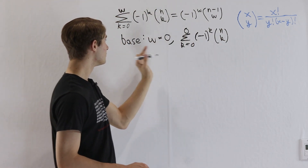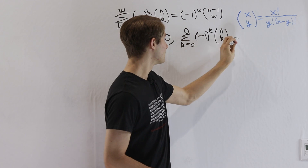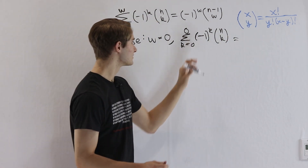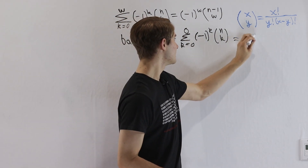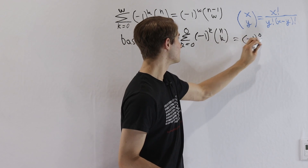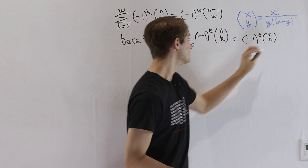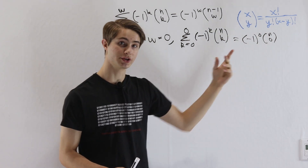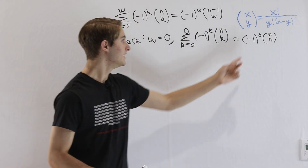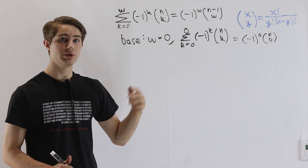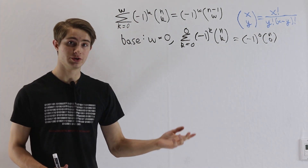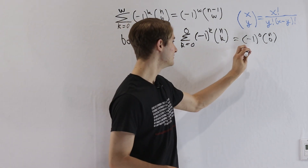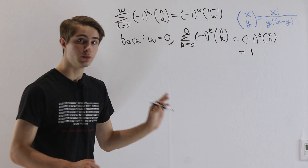We are only focusing on w here. In this case, this sum is only going to have one term, which is the zeroth term. So you get negative 1 to the 0 times n choose 0. We know negative 1 to the 0 is going to be 1. And n choose 0 — the number of ways to choose 0 things out of a group — is also 1. There's only one way to do that, so this is equal to 1.